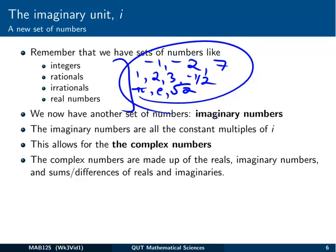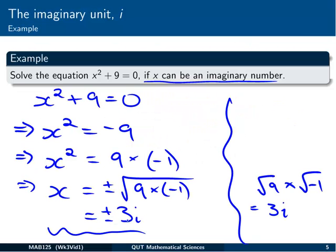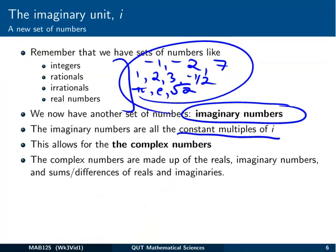We've now got another set of numbers, which is the imaginary numbers. And imaginary numbers are, you know, basically just constant multiples of i. So, we've already seen plus or minus 3 times i, plus or minus i. Any of these old numbers up here, integers, rationals, irrationals, multiplied by i, gives us an imaginary number.